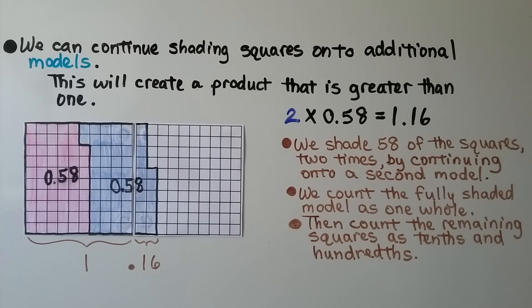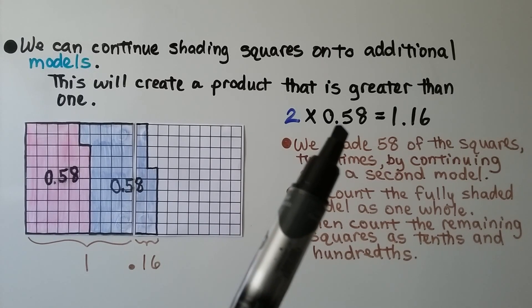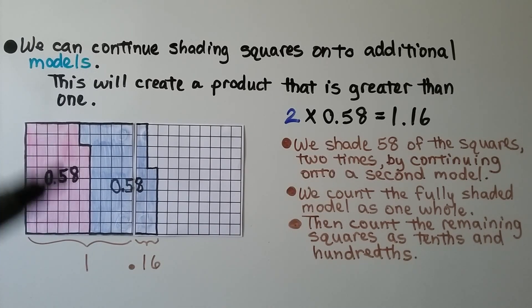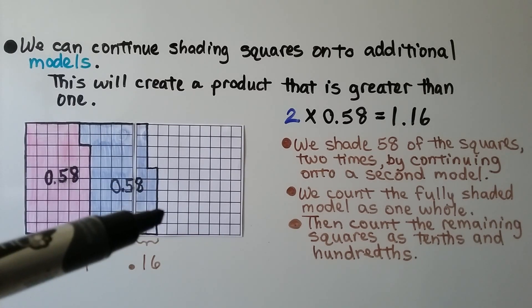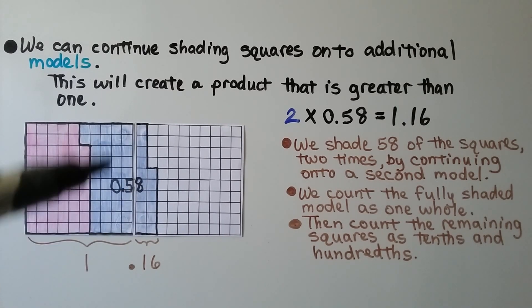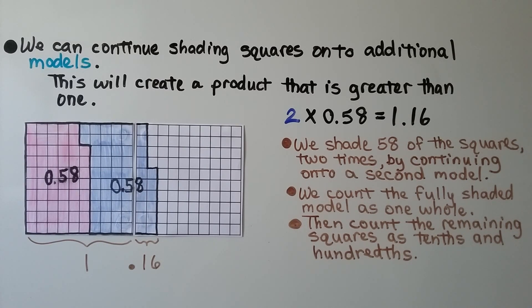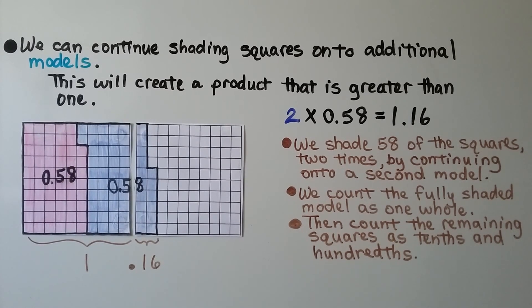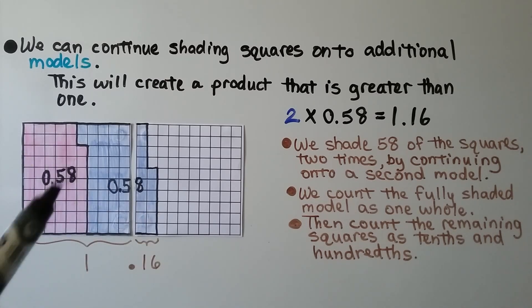We can continue shading squares onto additional models, which will create a product that is greater than one. We have two times fifty-eight-hundredths. We shade fifty-eight squares, then do it again — but it's going to overlap onto a second model. We shade fifty-eight squares two times by continuing onto a second model. We count the fully shaded model as one whole, then count the remaining squares on the other model as tenths and hundredths: one whole, one tenth, and six hundredths. Two times fifty-eight-hundredths is equal to one and sixteen hundredths.